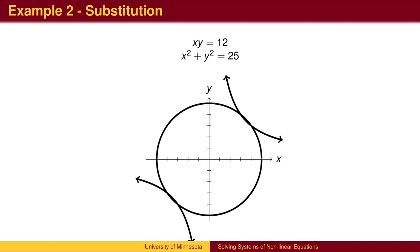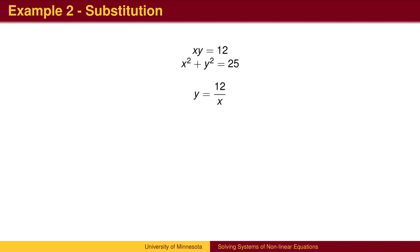Here is a second example. It is a hyperbola of the second form with a circle. It is hard to tell how often these graphs intersect. To solve algebraically, we can manipulate one equation to solve for one variable. In this case, dividing the first equation by x solves for y.